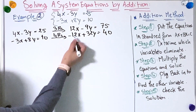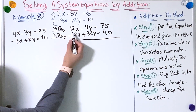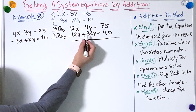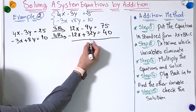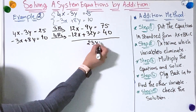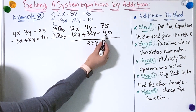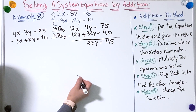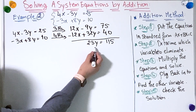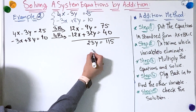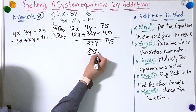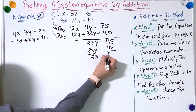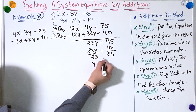Now I can add the equations. So 12x minus 12x equals 0, and minus 9y plus 32y equals 23y, and 75 plus 40 equals 115. To find y we're going to divide both sides by 23, so y equals 5.